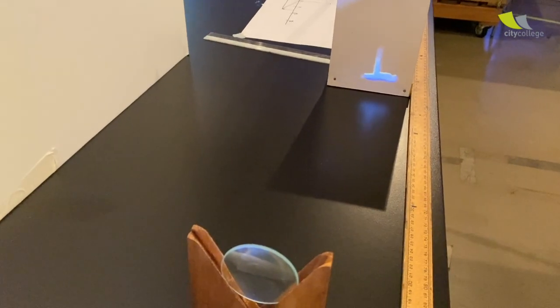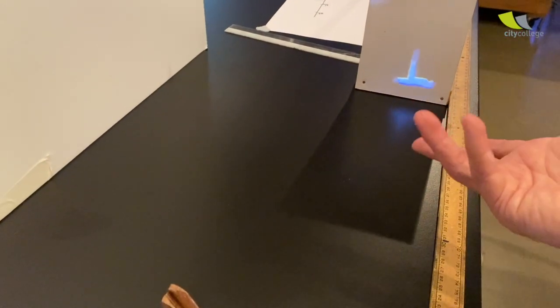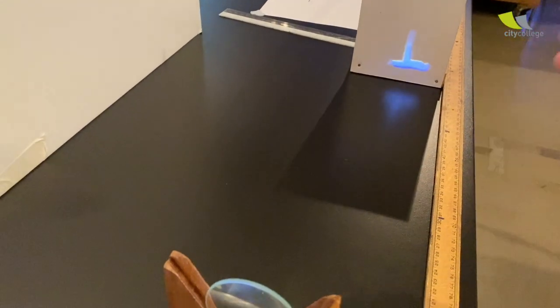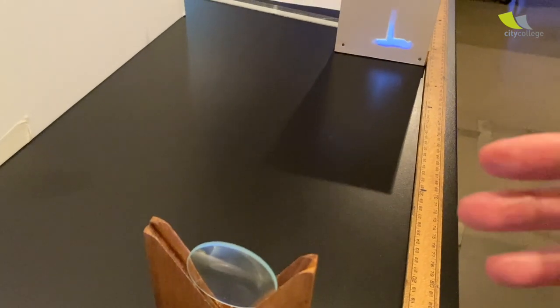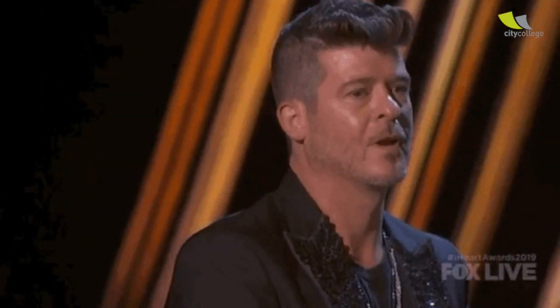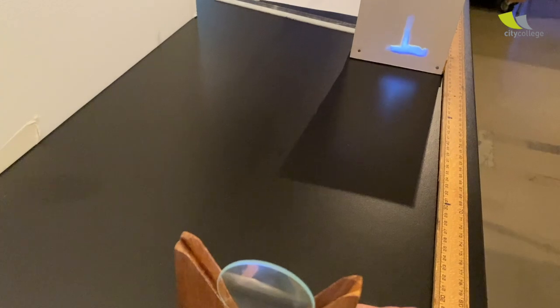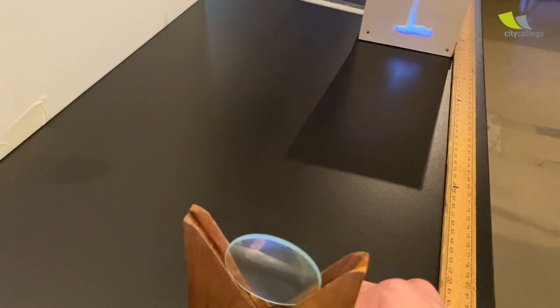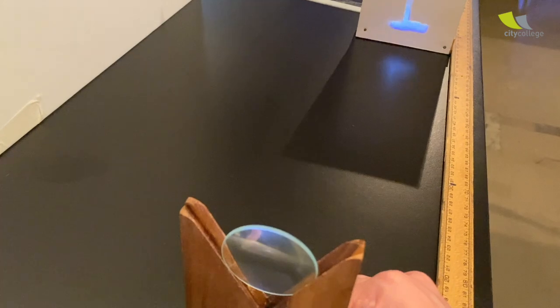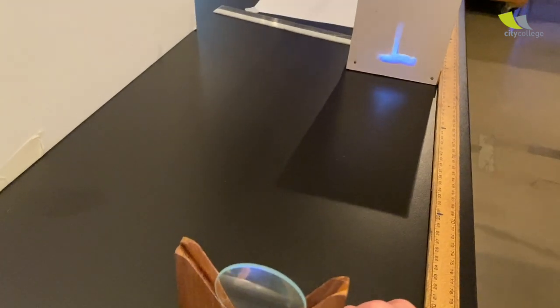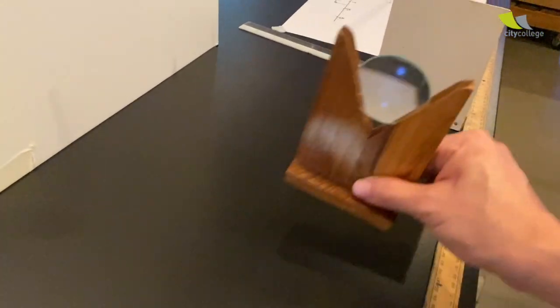Are you going to get a super crisp iPhone-type image? No, you won't get that because there are many variables. What you're looking for is the point where if you move forward it diffuses, and if you move backwards it diffuses—that is your clear image already. Now for the second one, moving from the screen...